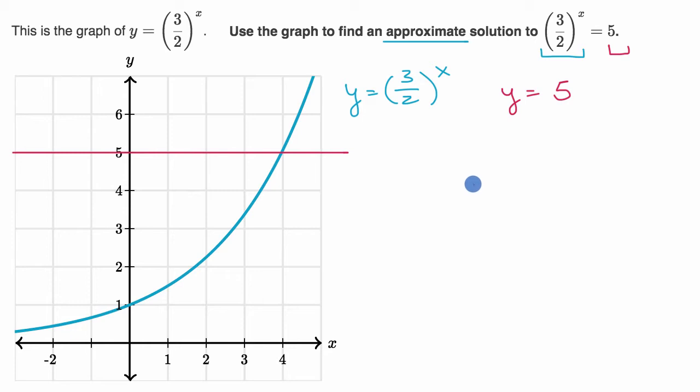And what's interesting here is if we can find the x value that gives us the same y value on both of these equations, well that means that those graphs are going to intersect. And if I'm getting the same y value for that x value in both of these, well then that means that 3 halves to the x is going to be equal to 5.